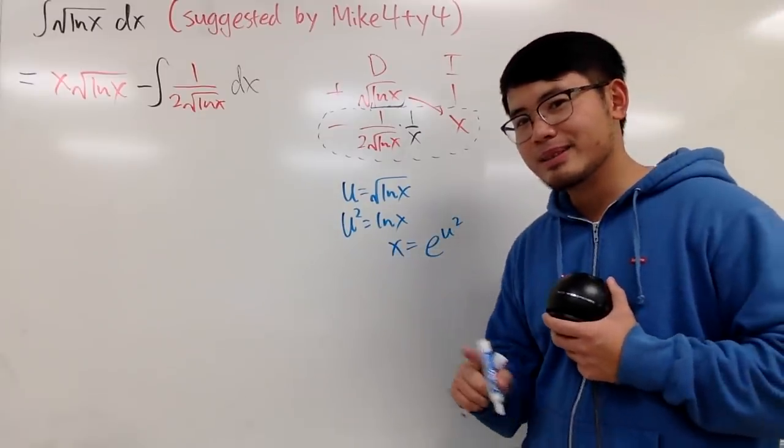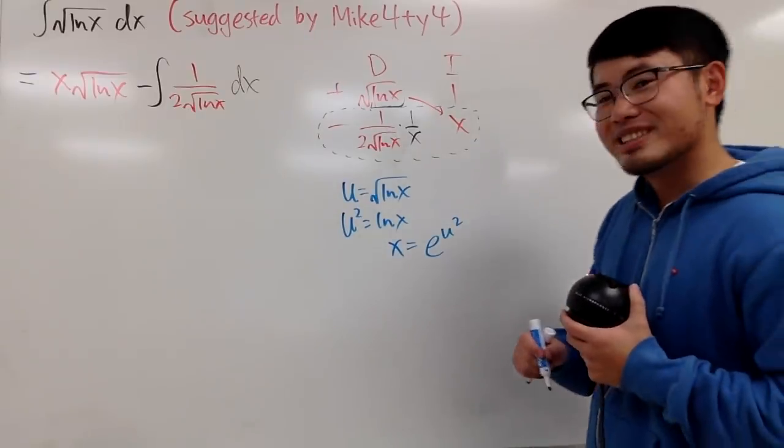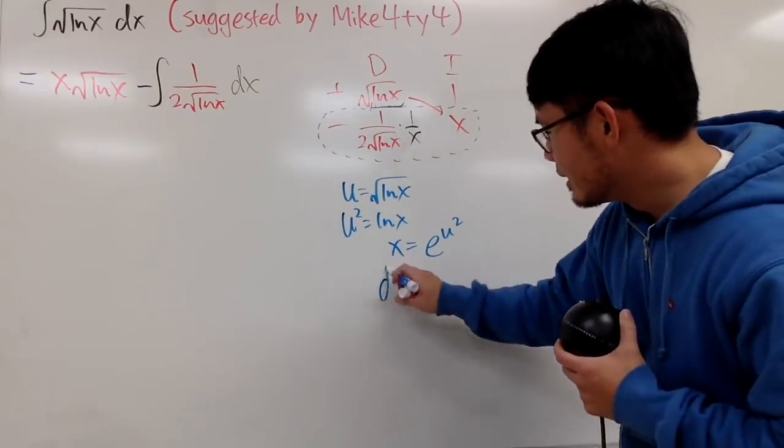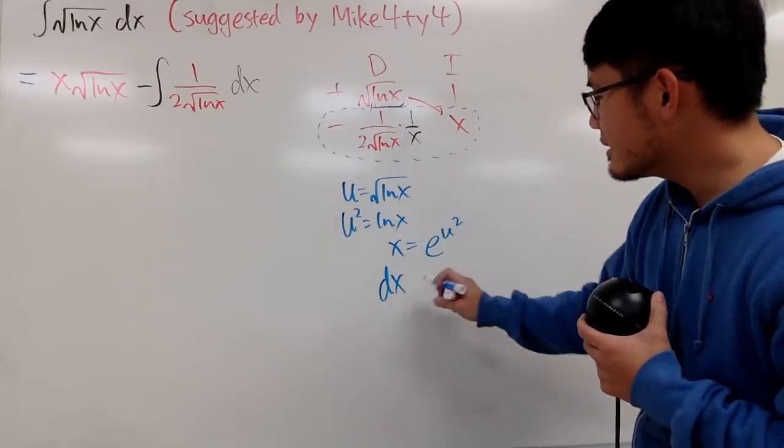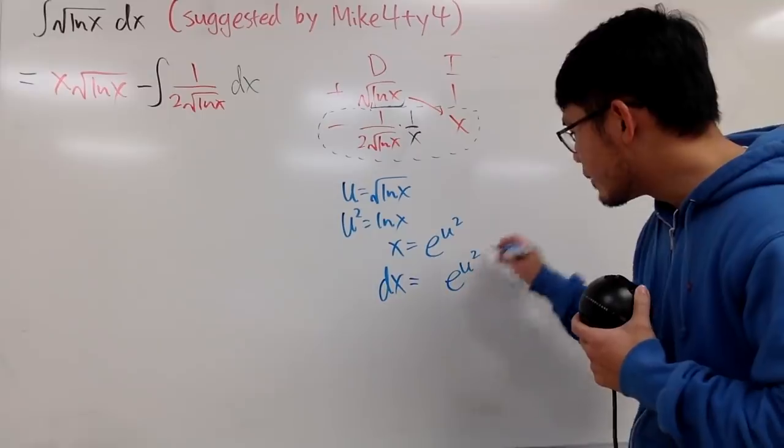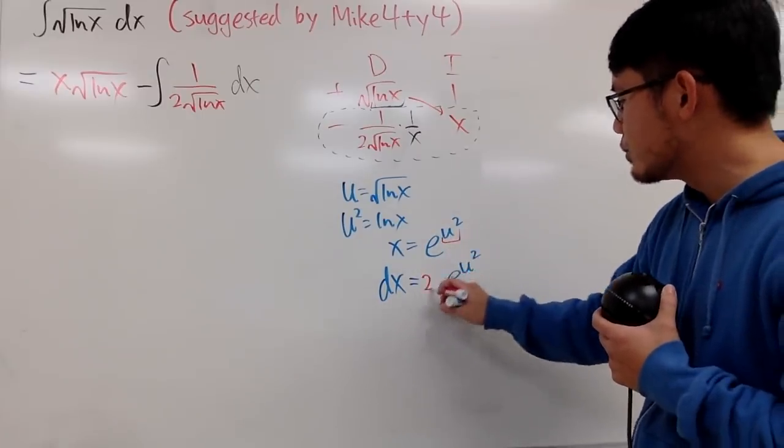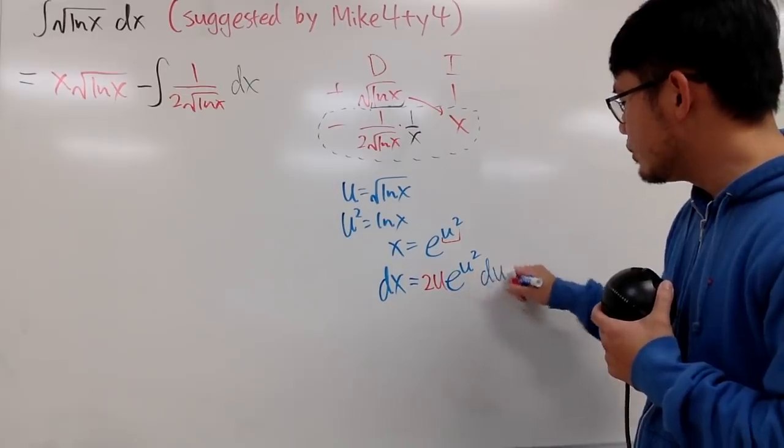Ah. This is how we're going to end up with the imaginary error function. But anyway, continue. Differentiate this so we can get the dx. And first, the derivative of e to the u-squared is first, repeat that. And then the chain rule says, we have to multiply by the derivative right here, which is 2u, and then don't forget the du right here.